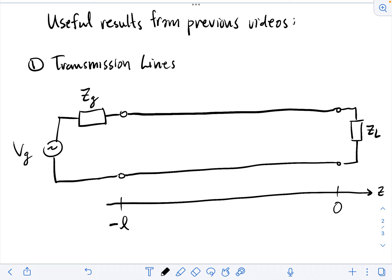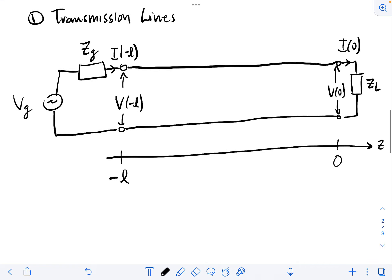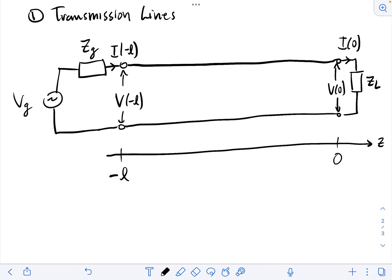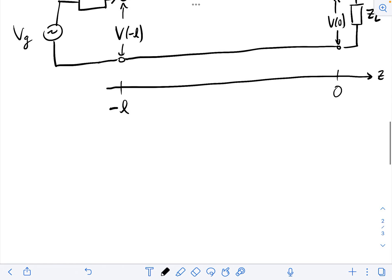With this geometry, the voltage at the end of the transmission line connected to the generator is V at Z equals minus L, and likewise the current at Z equals minus L. At the load impedance we have voltage V at Z equals zero, and the current through Z_L is I at Z equals zero. It's useful to have this geometry in mind as we go through today's analysis.